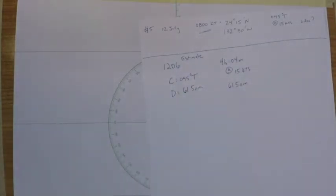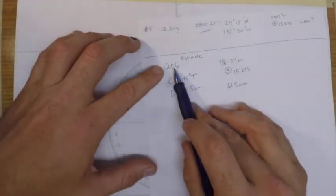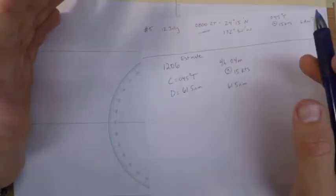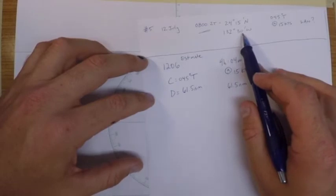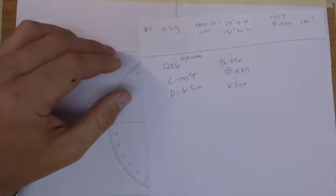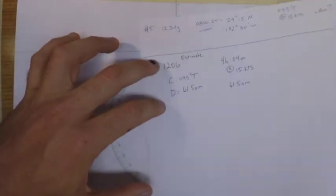Now one thing I would say is like 1206 was our estimate, and we know that we're not at a standard meridian. So you could probably kind of estimate where the ship is going to be four hours later to a pretty high degree of accuracy and then just answer the question that way. But we'll solve it all the way through.